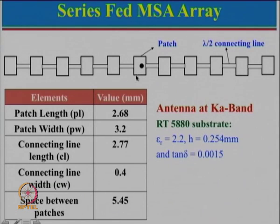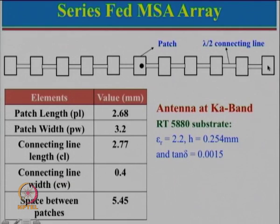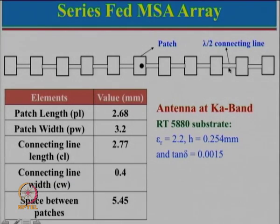Because of the lambda/2 length, the plus becomes minus. So minus here, then plus, then plus here becomes minus, minus becomes plus. That means all the patches have pluses on one side and minuses on the other side, so they will be radiating in the broadside direction and hence give rise to better gain. The next question is: what should be the characteristic impedance of this connecting line?